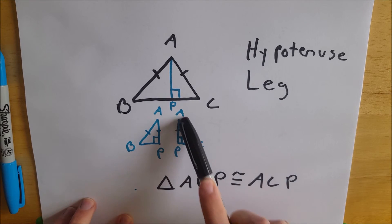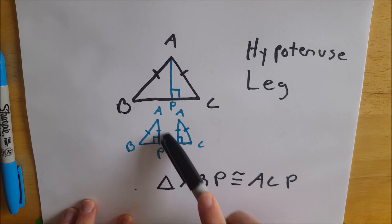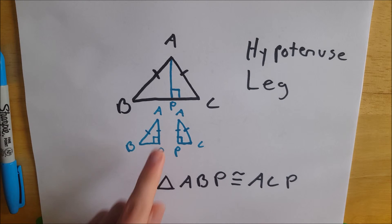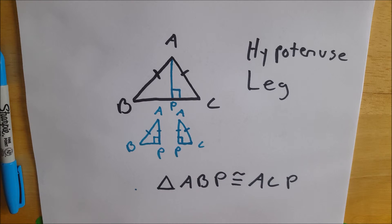We see our hypotenuse AB congruent to hypotenuse AC and then they have the same exact leg of AP so the HL theorem gets us the congruency.